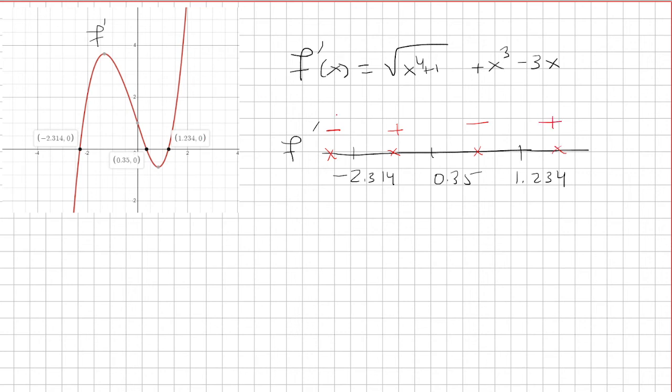Now when f prime is negative, that means our function is decreasing. And when it's positive, it's increasing.